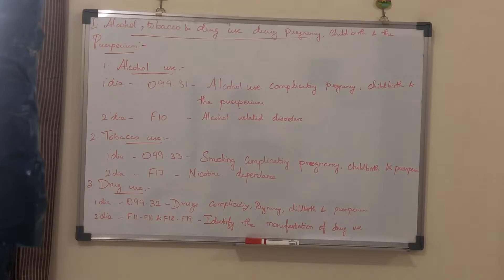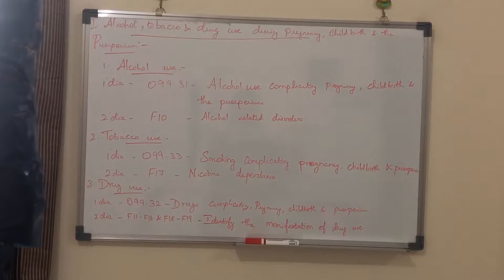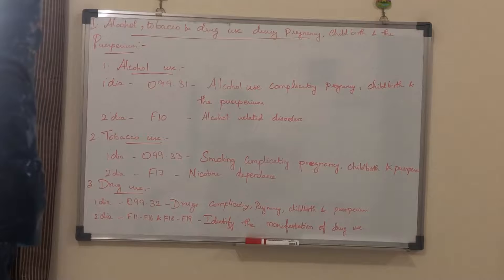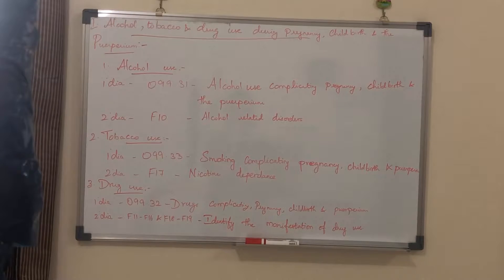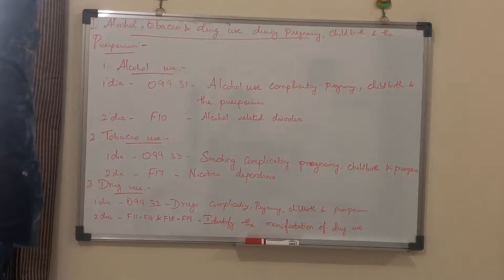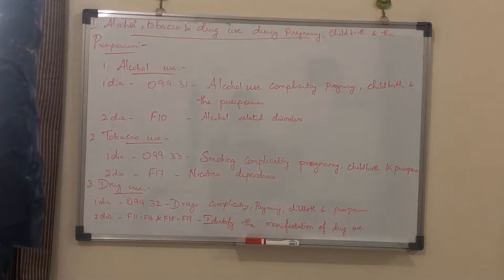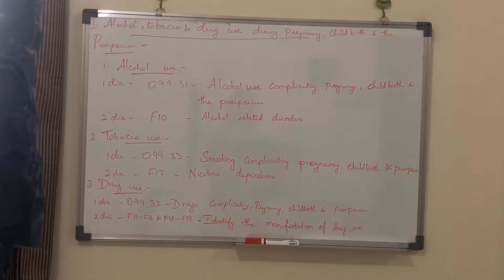First, the alcohol use. If the patient is using alcohol that is complicating the pregnancy, childbirth and puerperium, then we have to code the primary diagnosis as O99.31 — alcohol use complicating pregnancy, childbirth and puerperium. And the secondary diagnosis is from the F10 category, alcohol related disorders.